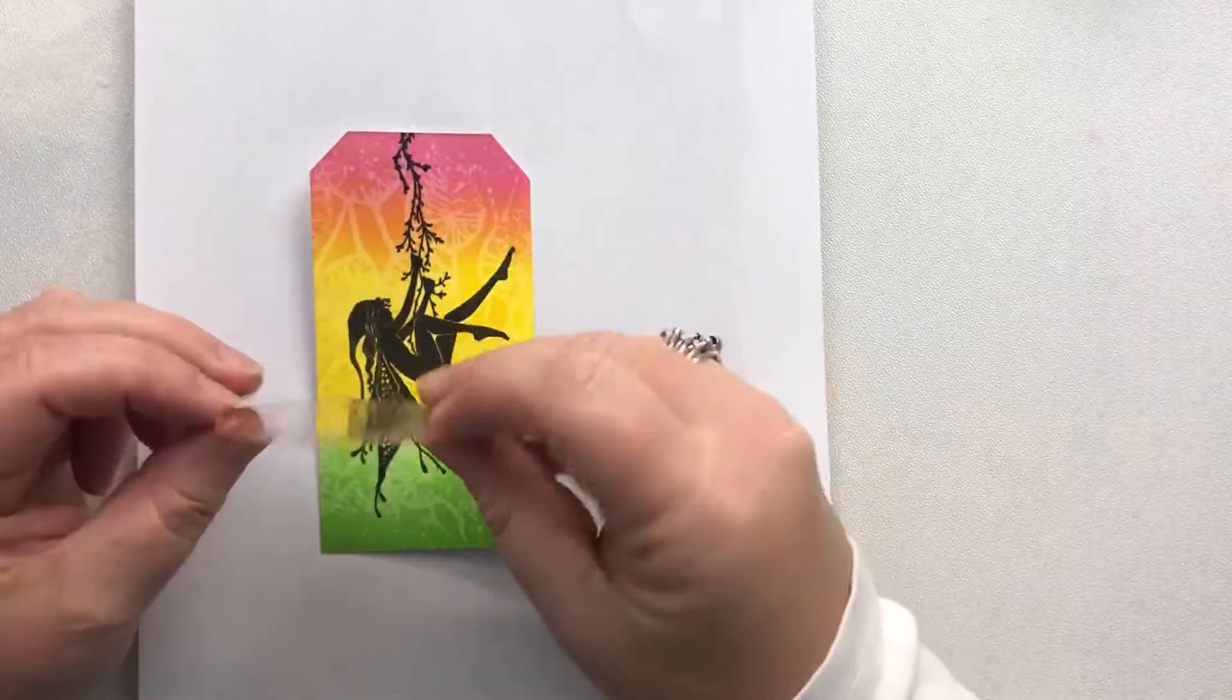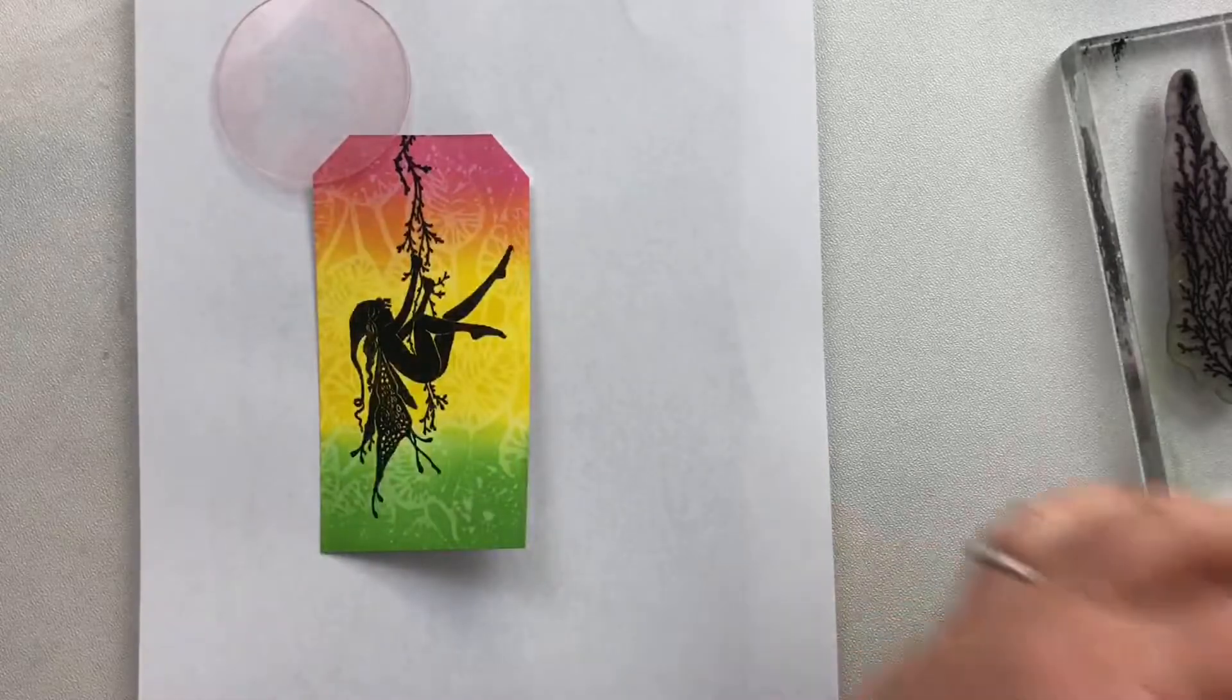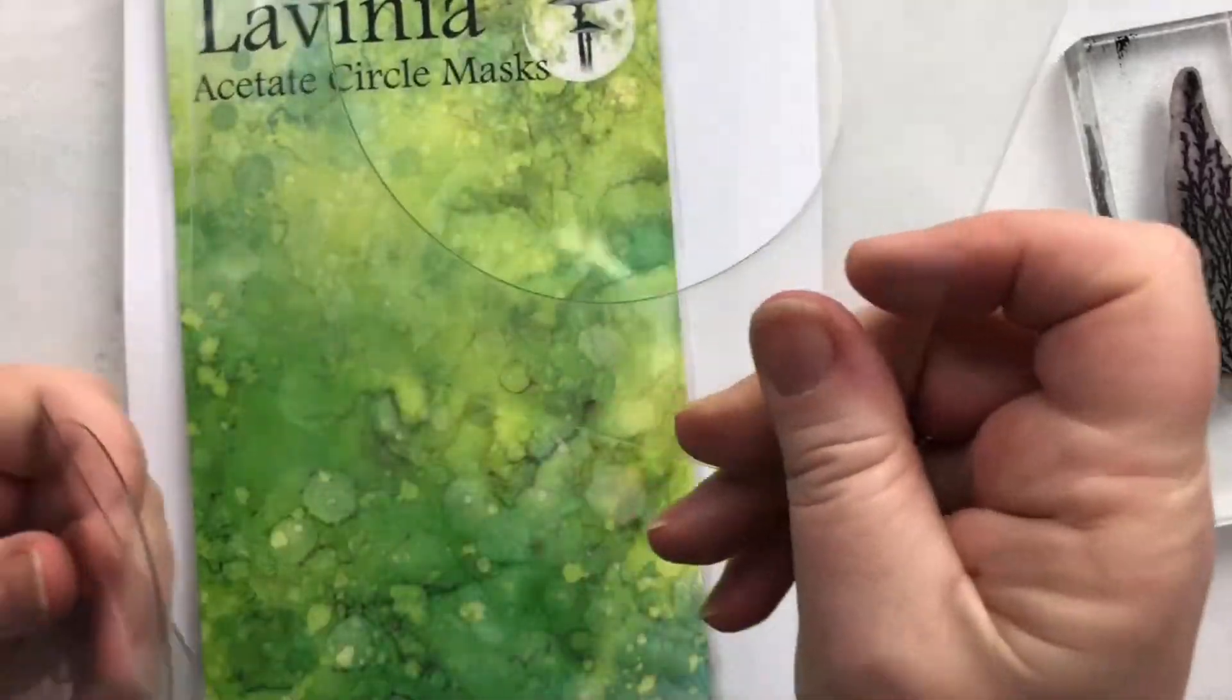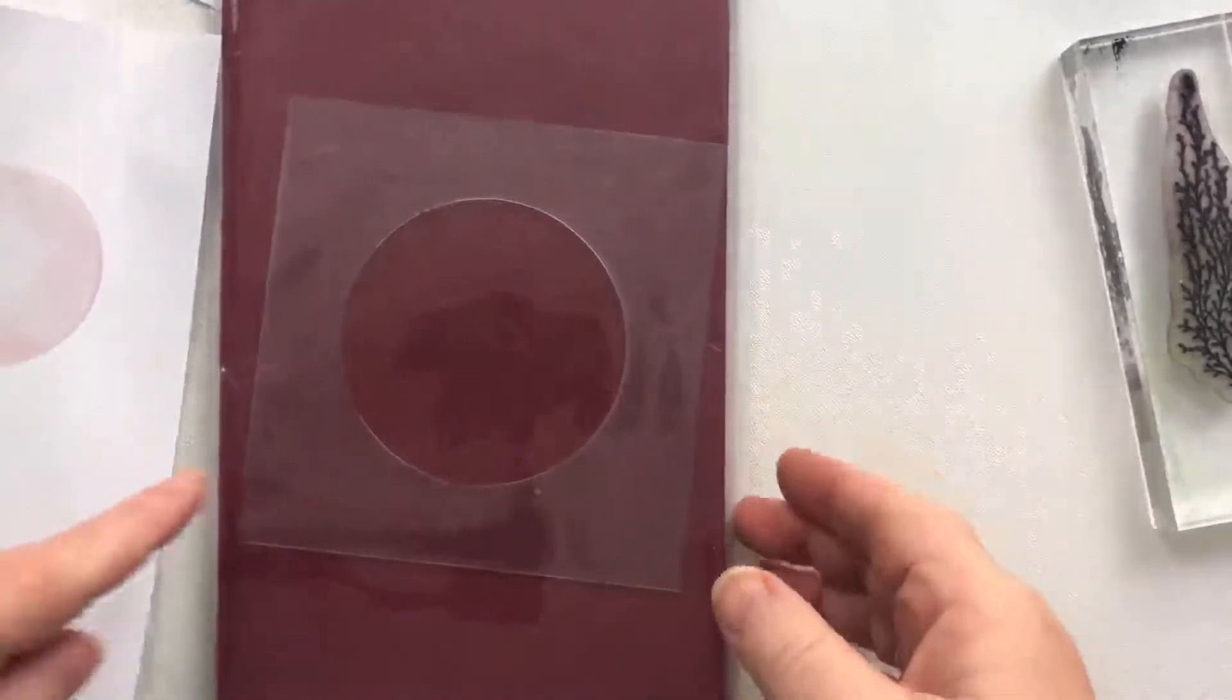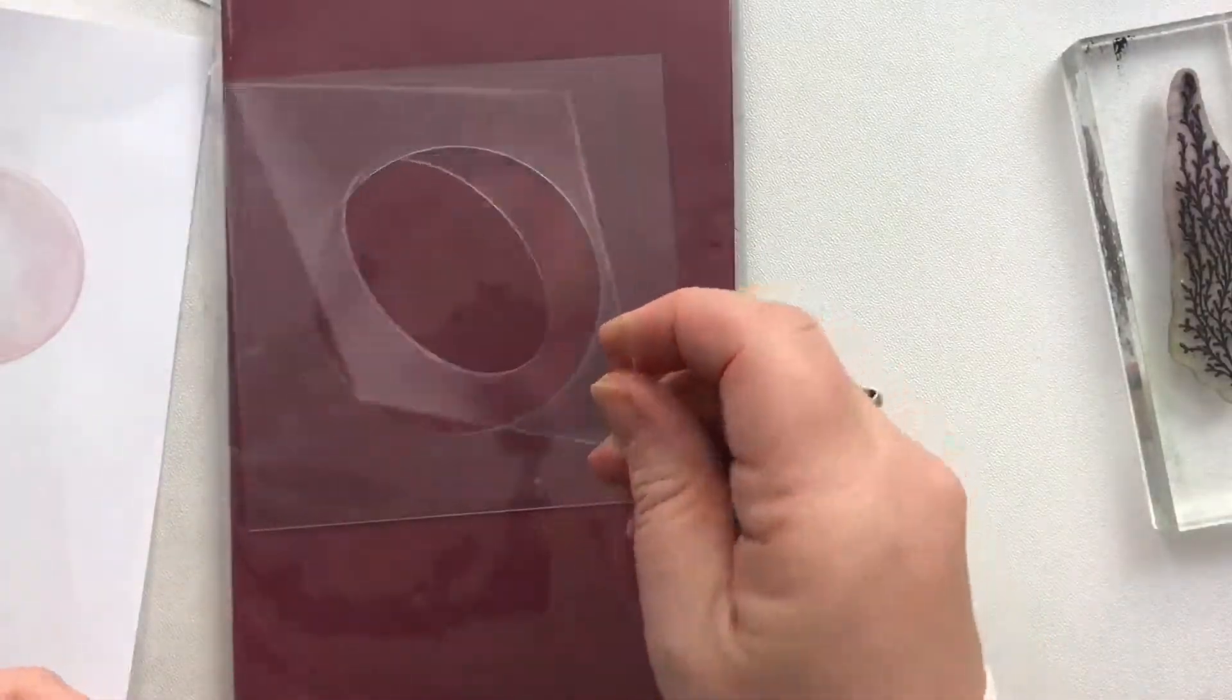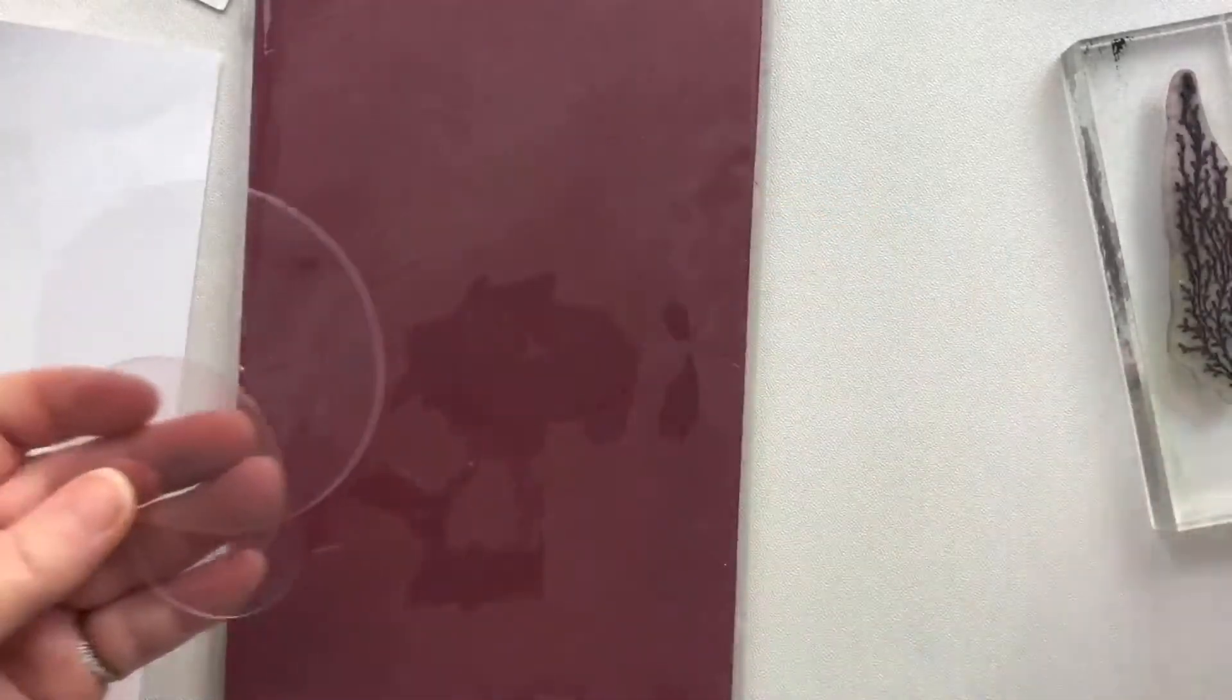So the next thing we're going to do is I'm going to take my moon mask. I'm actually using one of the moons out of the Lavinia set of circle masks. In this set you get this large moon, this smaller one, and then you get the actual moons themselves, three of those, so it's a fabulous set.